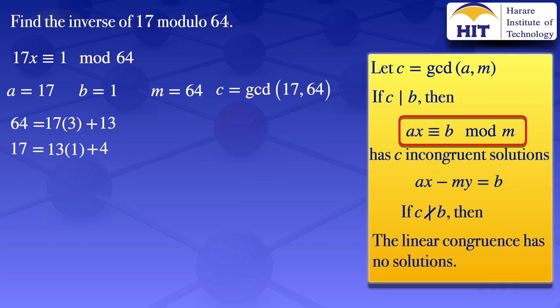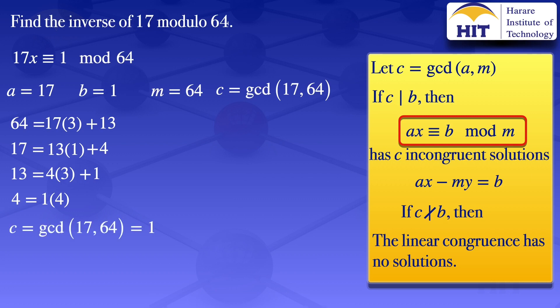Then we go on and look at 13 and 4. The floor value of 13 divided by 4 gives us 3, so 13 equals 4 times 3, and the remainder is 13 minus 4 times 3, which gives us 1. Then we look at 4 and 1: the floor value of 4 divided by 1 is 4, so 4 equals 1 times 4. Using the Euclidean algorithm, the greatest common divisor is the last non-zero remainder, which is 1. So the greatest common divisor of 17 and 64 is 1.